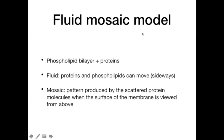The model is called 'fluid' because both the phospholipids and the proteins can move about by diffusion. The phospholipids move sideways mainly within their own layers, and some protein molecules also move about within the phospholipid bilayer, like icebergs in the sea. Others remain fixed to structures inside or outside the cell. The word 'mosaic' describes the pattern produced by the scattered protein molecules when the surface of the membrane is viewed from above.